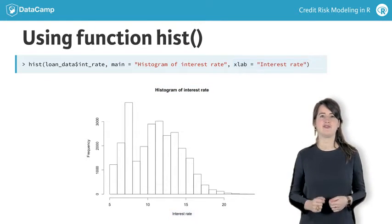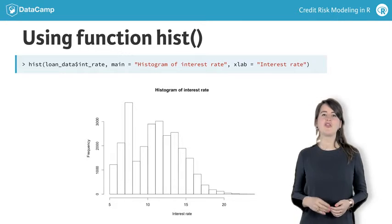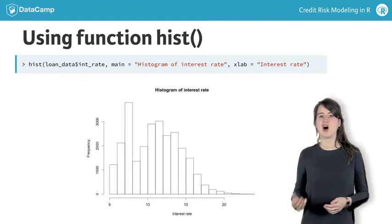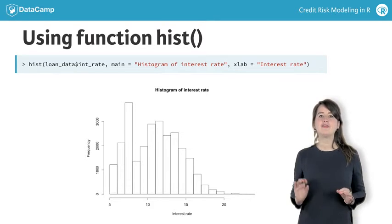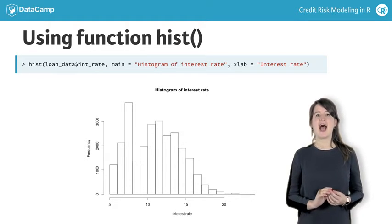The frequencies for the variable of interest are shown on the y-axis. Here, you can see that all loans had an interest rate over 5%, and very few loans had an interest rate higher than 20%.